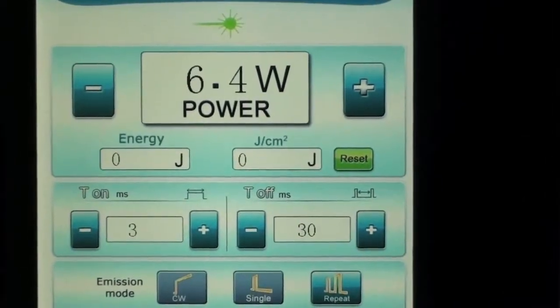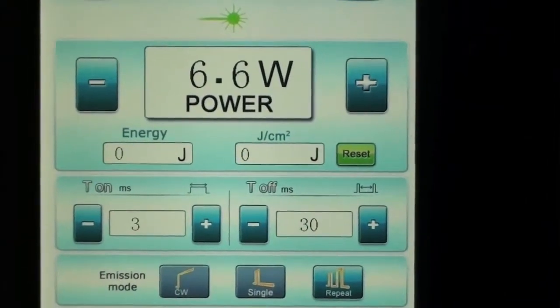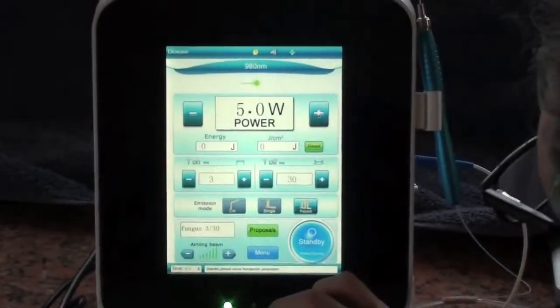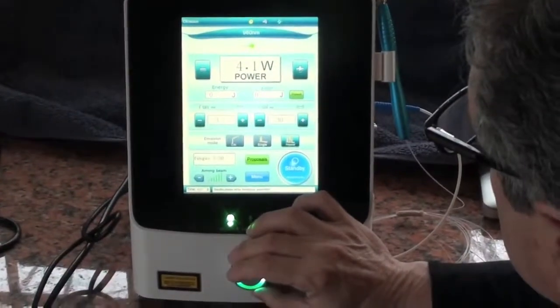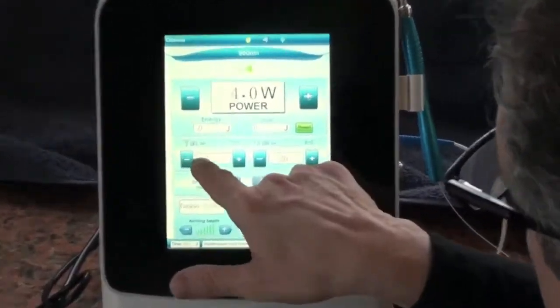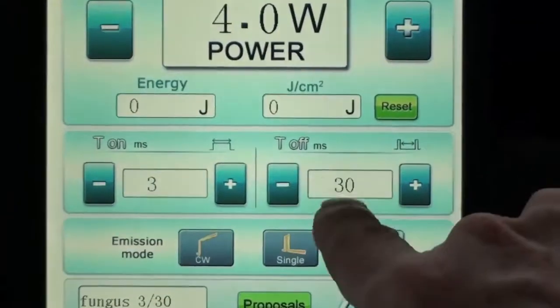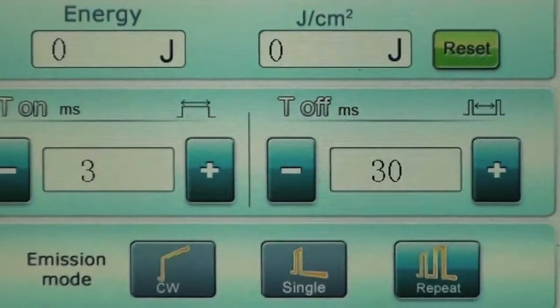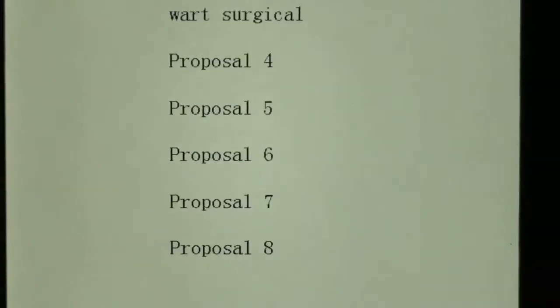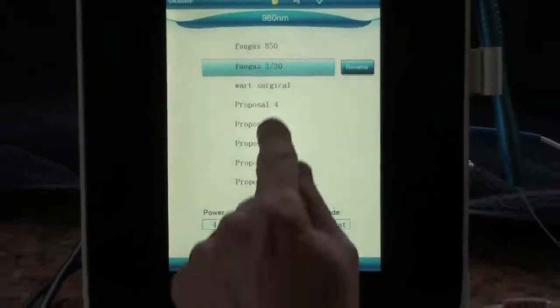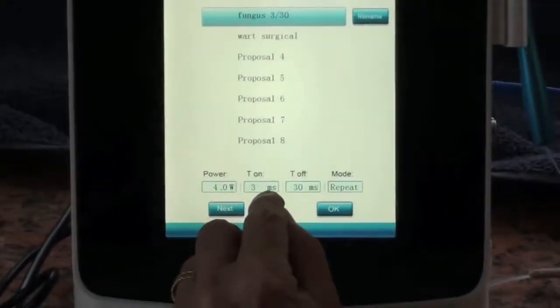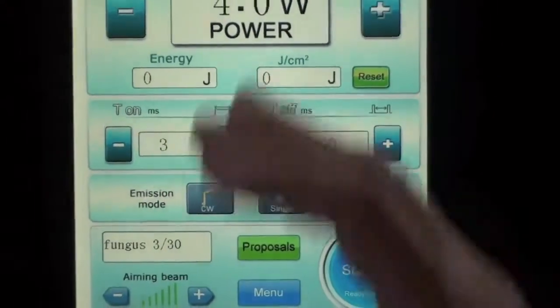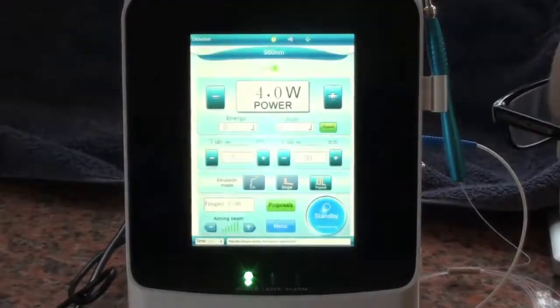Let's say this one happens to be set wrong for some reason. All you do is adjust. Actually it isn't, we start at four, we're going to correct this for you right now. There it is at four, three milliseconds on, see the MS, 30 milliseconds off. This particular laser works in micron, milli and seconds. We're going to press, go back to proposals and it's set. The way you know it's set correctly: it's four, three, 30, repeat mode. There it is perfectly. So if there's a mistake when it's set wrong, I showed you how to correct it very easily.